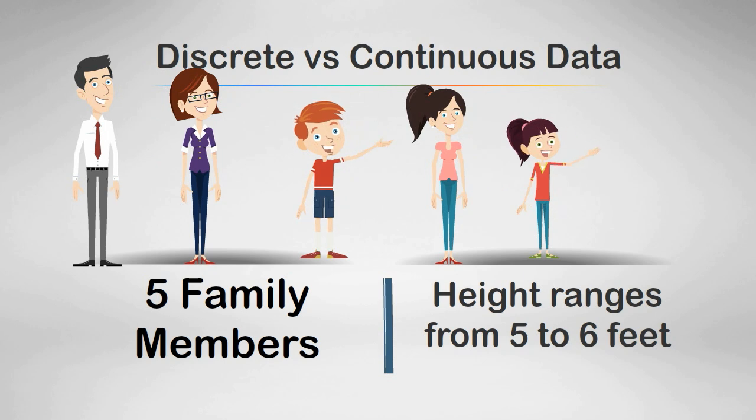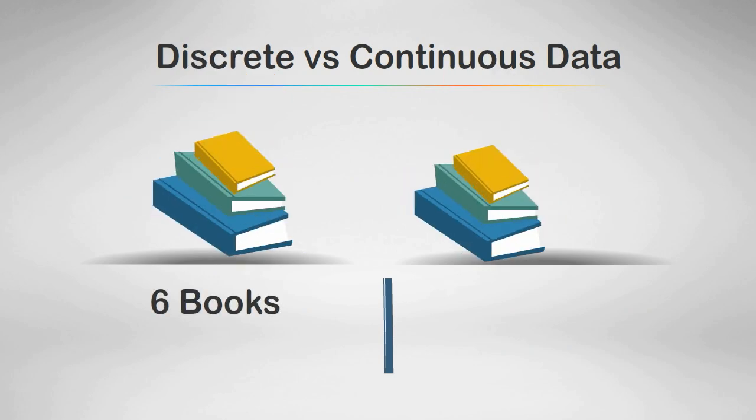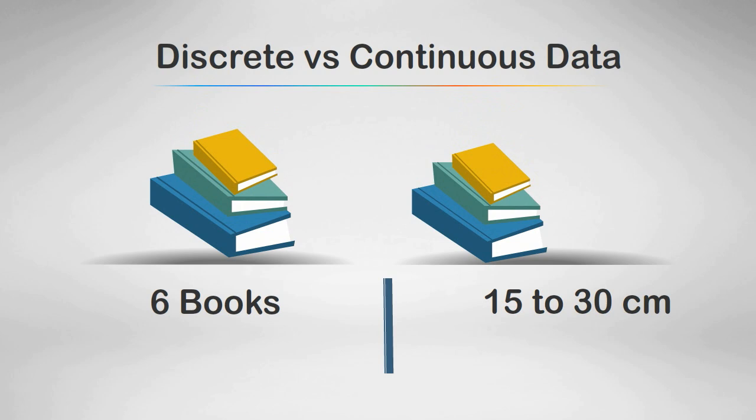Next let's talk about books on your bookshelf. The discrete data would be you have exactly 6 books. The continuous data would be the books range from 15 to 30 cm in length.